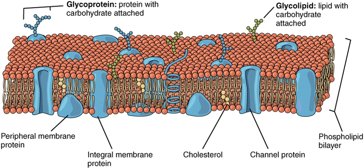Plasma membranes can also form different types of supramembrane structures such as caveolae, postsynaptic density, podosome, invadopodium, desmosome, hemidesmosome, focal adhesion, and cell junctions. These types of membranes differ in lipid and protein composition.